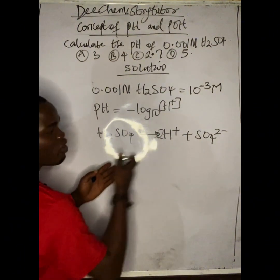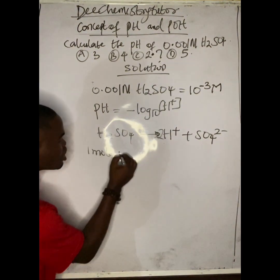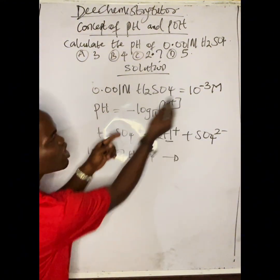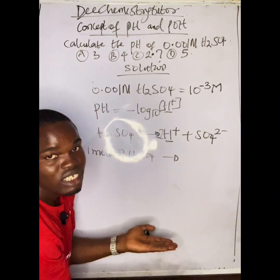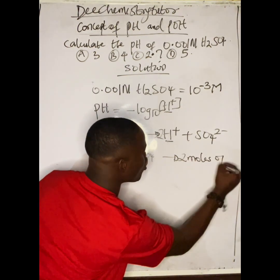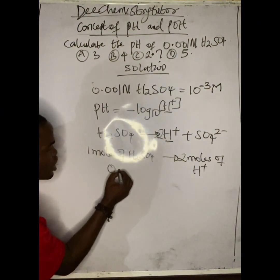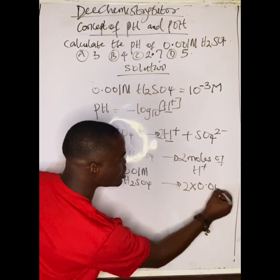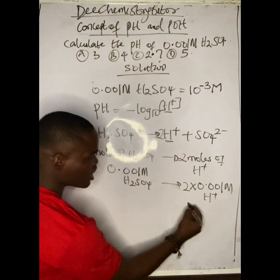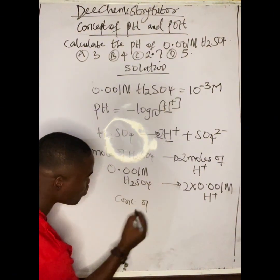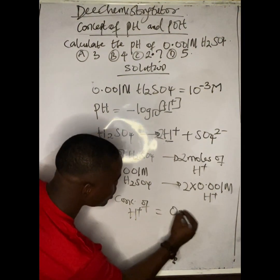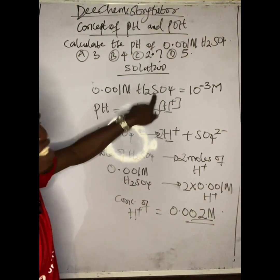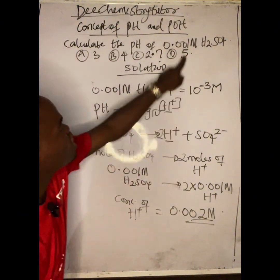Using the mole ratio: one mole of H₂SO₄ produces two moles of H⁺. So if we have 0.001 mol/L H₂SO₄, we get 2 × 0.001 = 0.002 mol/L H⁺. Therefore, the concentration of H⁺ needed in the formula is 0.002 mol/L. If you had used 0.001 directly, your answer would be wrong.